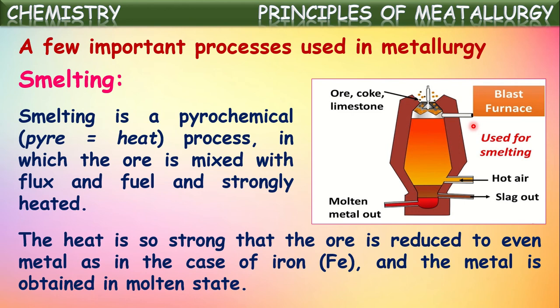The heat is so strong that the ore is reduced to pure metal, as in the case of iron. The ore heated along with fuel and flux at very high temperature causes the pure metal formed to be in molten state. For example, if we take iron, it is separated from its impurities and heated strongly with fuel and flux — iron comes into molten state. Pure iron is separated at the bottom in the molten form, remaining impurities are collected in another channel. This procedure is called smelting.